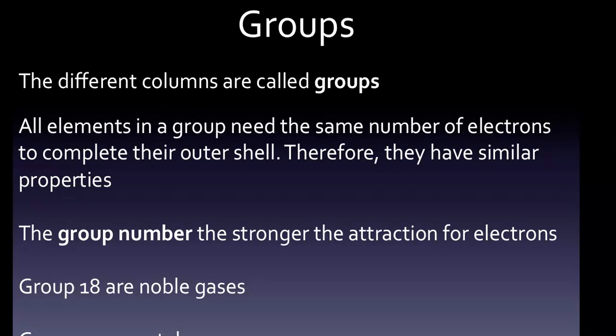On the periodic table, the higher the group number, the stronger the attraction for electrons. For example, fluorine which is in group 17, way off to the right, is one electron short of a complete shell. Therefore, fluorine has a strong attraction for electrons.